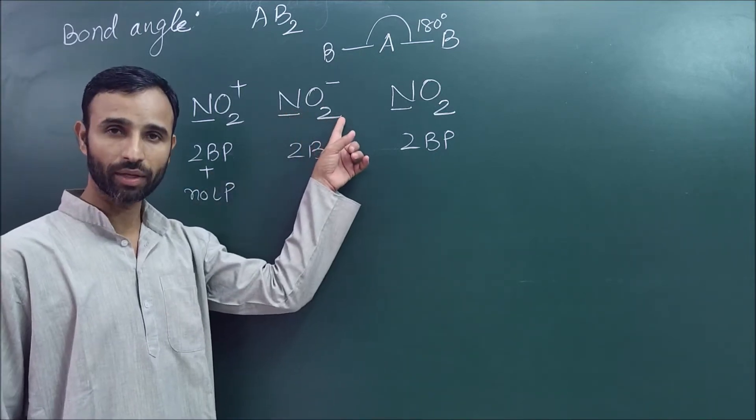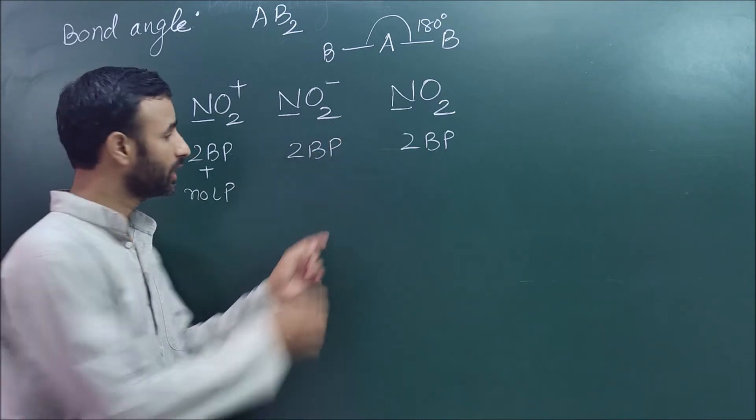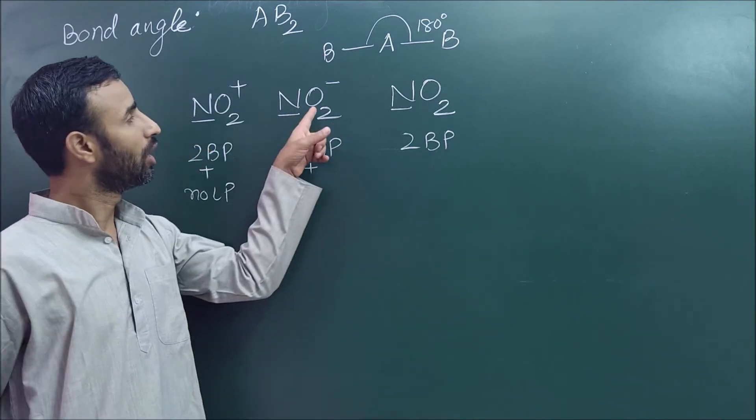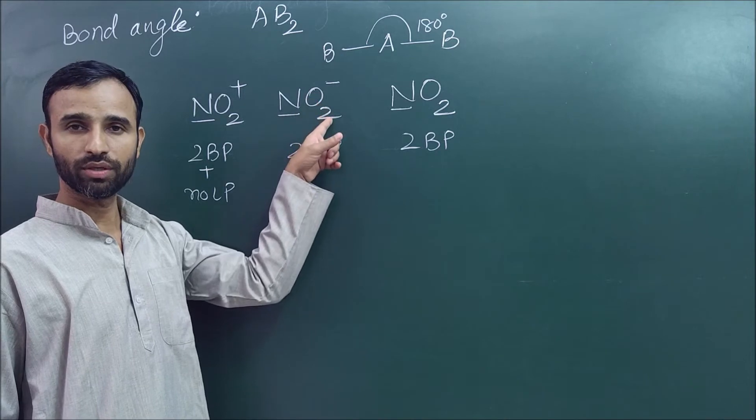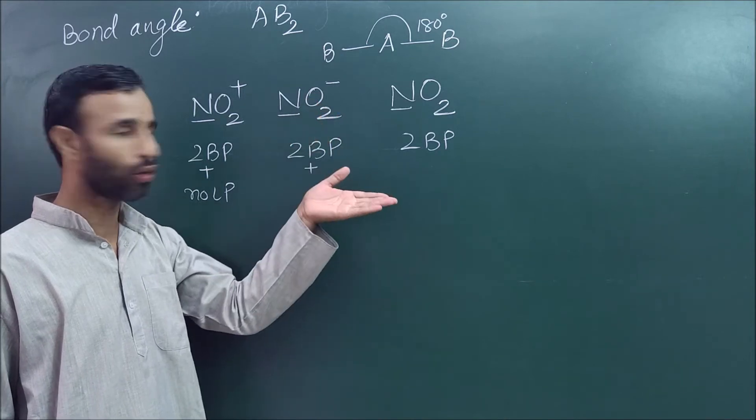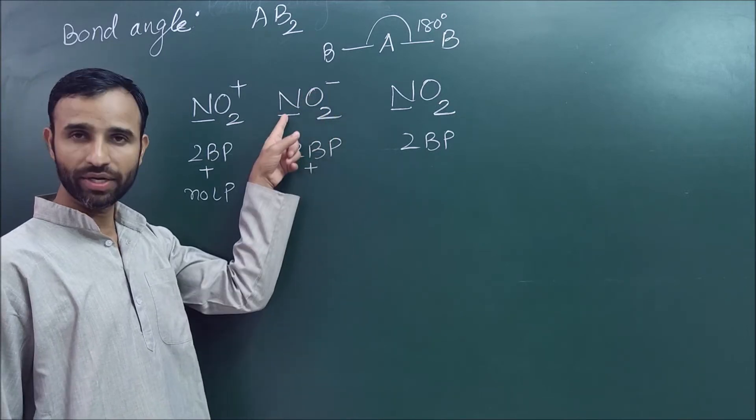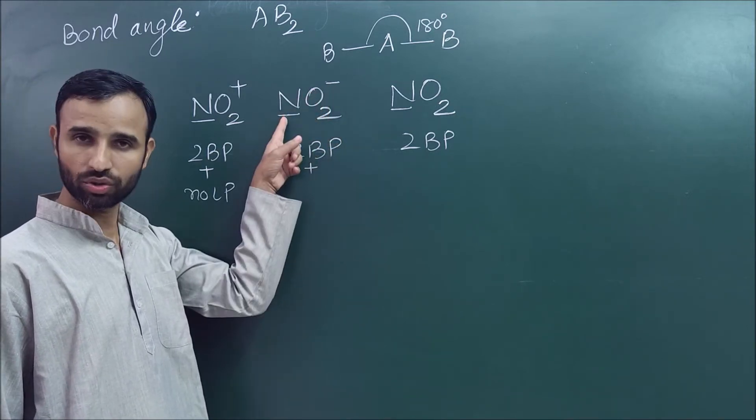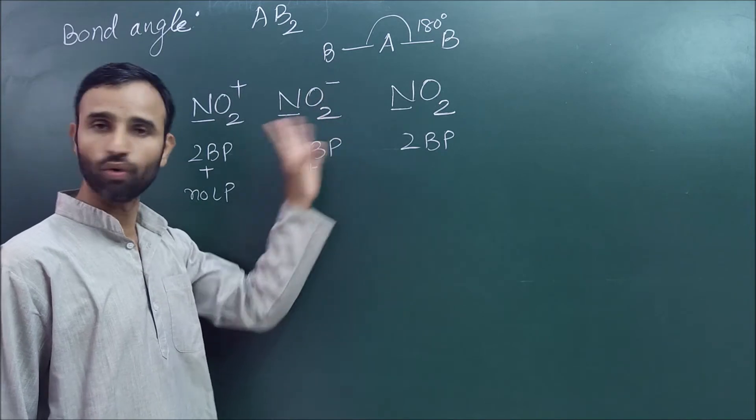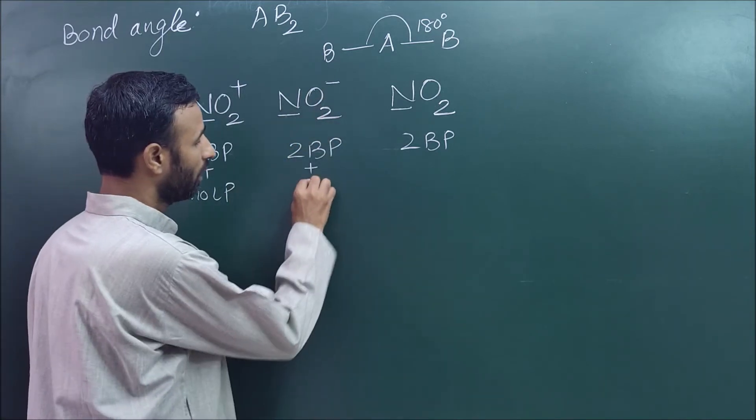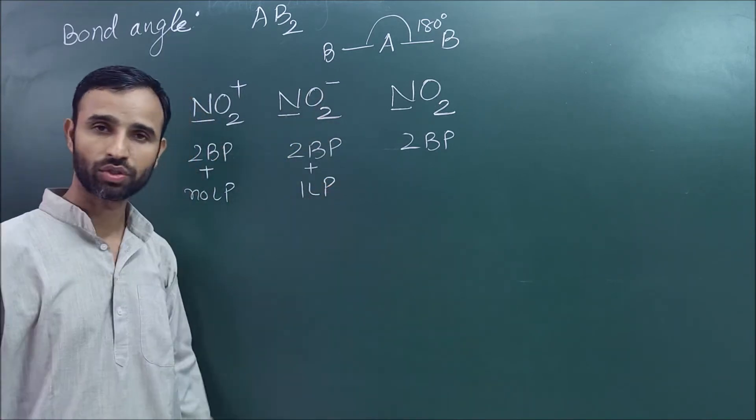In case of NO2 negative, there are two bond pairs. How many electrons are used by oxygen? Again four. Nitrogen has five electrons. One electron is gained, so total six electrons. Out of six, four are used, so only one pair left. So one lone pair.